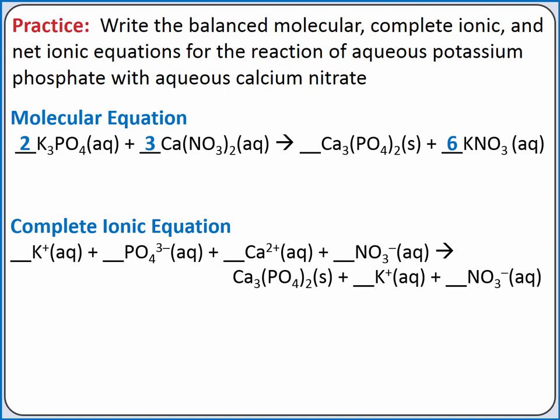To determine our coefficients in the complete ionic equation for the separated ions, we multiply the coefficient for the ionic compound by the number of ions in the compound. For example, there are 2 potassium phosphates, and each has 3 potassium ions, so there are a total of 6 potassium ions. Likewise, there are 3 calcium nitrates, and each has 2 nitrate ions, so there are a total of 6 nitrate ions.